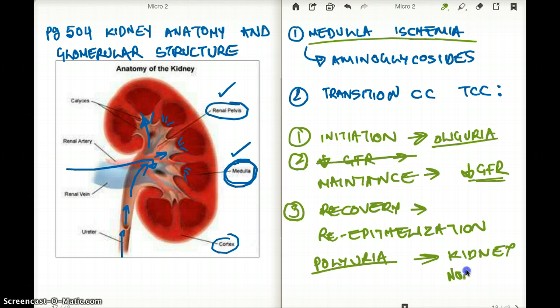Now it's trying to compensate, you can even have polyuria, and kidney is going to be back to normal. Something that can happen with acute tubular necrosis, and acute tubular necrosis can finally be okay, kind of related to the medulla ischemia.